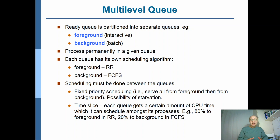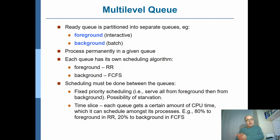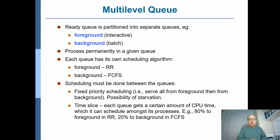We take the ready queue and partition it into several separate queues. For example, you have a foreground queue for interactive processes and a background queue for batch processes. Remember, interactive processes have short CPU bursts and very frequent IO bursts, whereas background processes have very long CPU bursts and seldom have IO bursts.